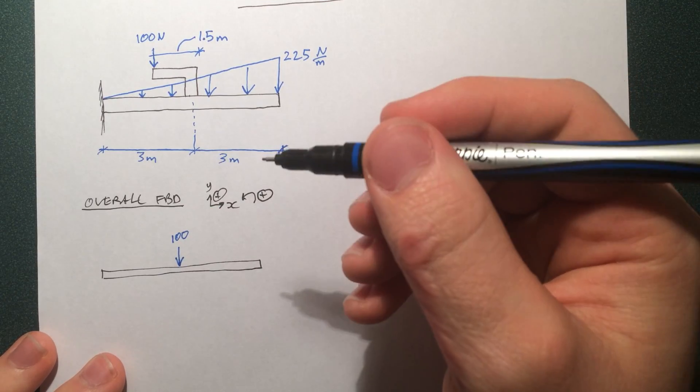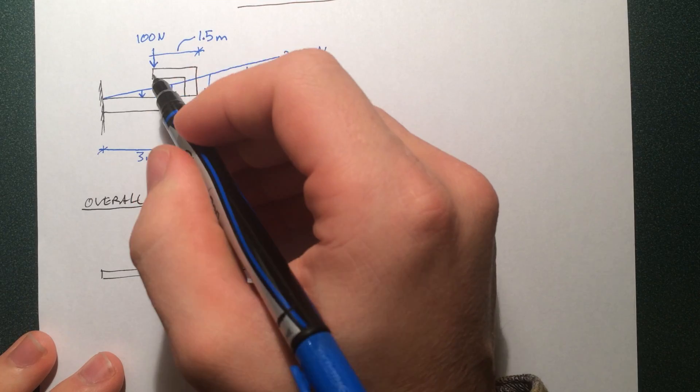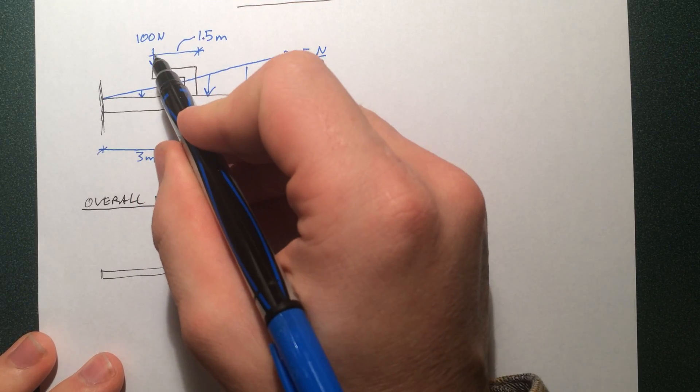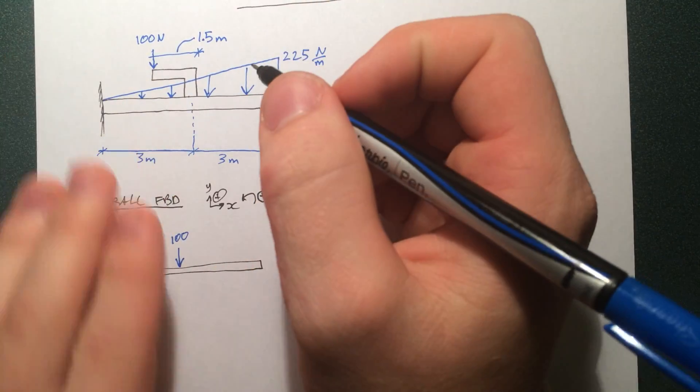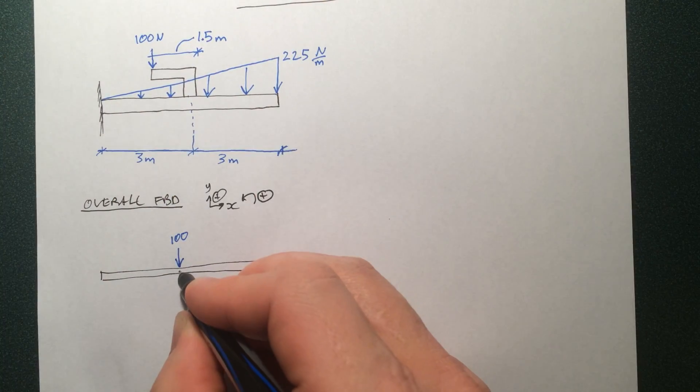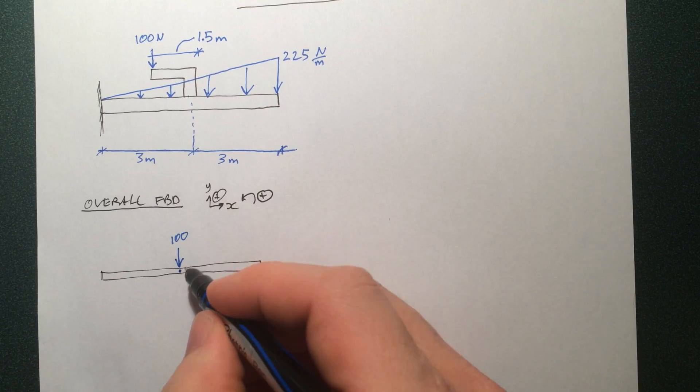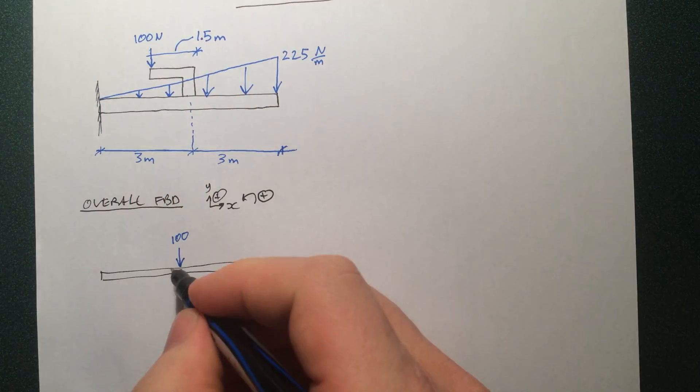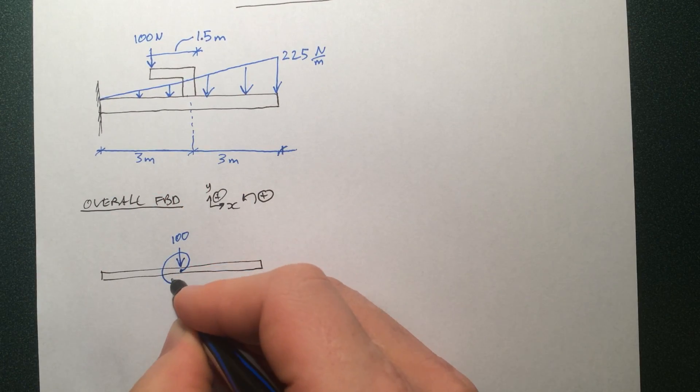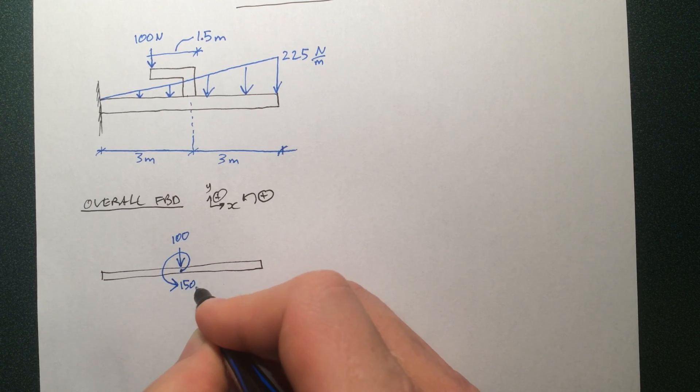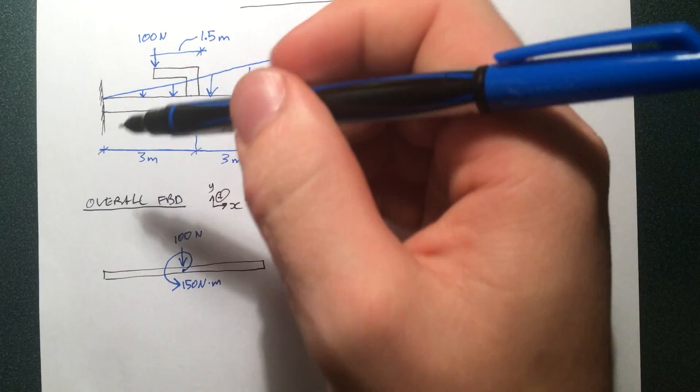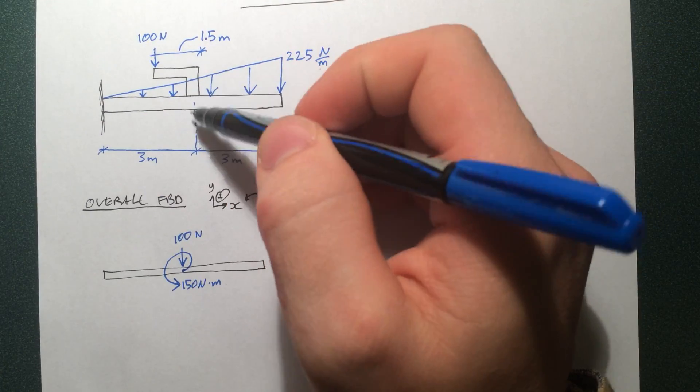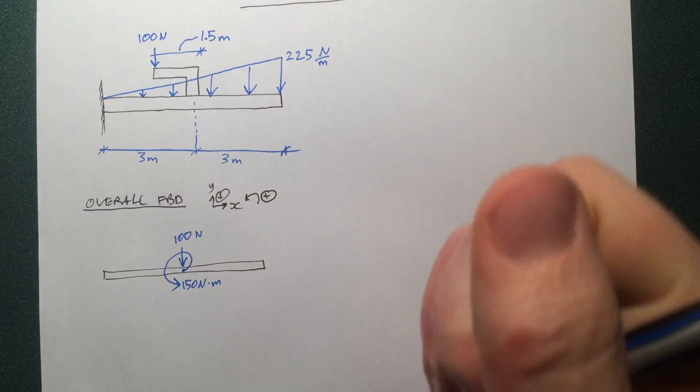So we put that 100 newtons right there. It's the same thing with the moment that you get here. Because you get a moment because you have a force applied a distance away. So it's going to be 100 times 1.5, that's 150. That moment also gets applied here. In this direction, it's causing it to spin this way, so we'll keep it that way. 150 newton meters. So that's basically how you collapse this contraption onto a free-body diagram.